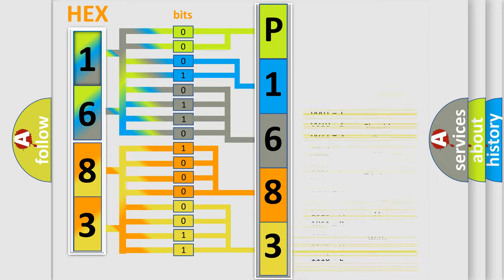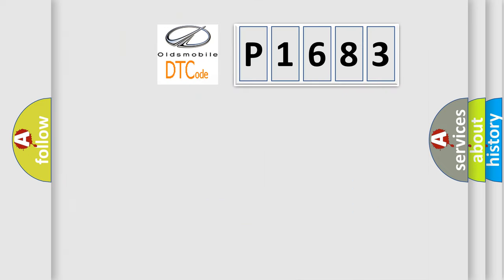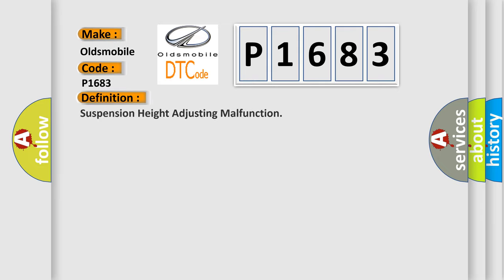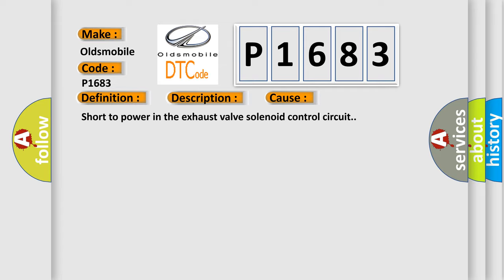We now know in what way the diagnostic tool translates the received information into a more comprehensible format. The number itself does not make sense to us if we cannot assign information about what it actually expresses. So, what does the diagnostic trouble code P1683 interpret specifically for Oldsmobile car manufacturers? The basic definition is: Suspension height adjusting malfunction. A short description of this DTC code: continuous exhaust valve solenoid on time is more than 120 seconds. This diagnostic error occurs most often in these cases: short to power in the exhaust valve solenoid control circuit.